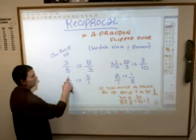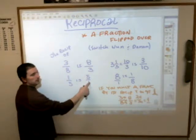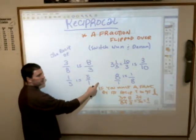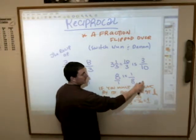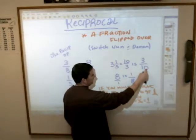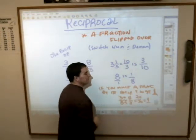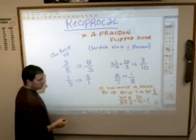And that works for all of these. Take a look. 1 5th times 5 over 1, you'd get 5 over 5, which is 1. 8 over 1 times 1 over 8, you'd get 8 over 8, and that equals 1. 10 3rds times 3 10ths, you'd get 30 over 30, and that equals 1.